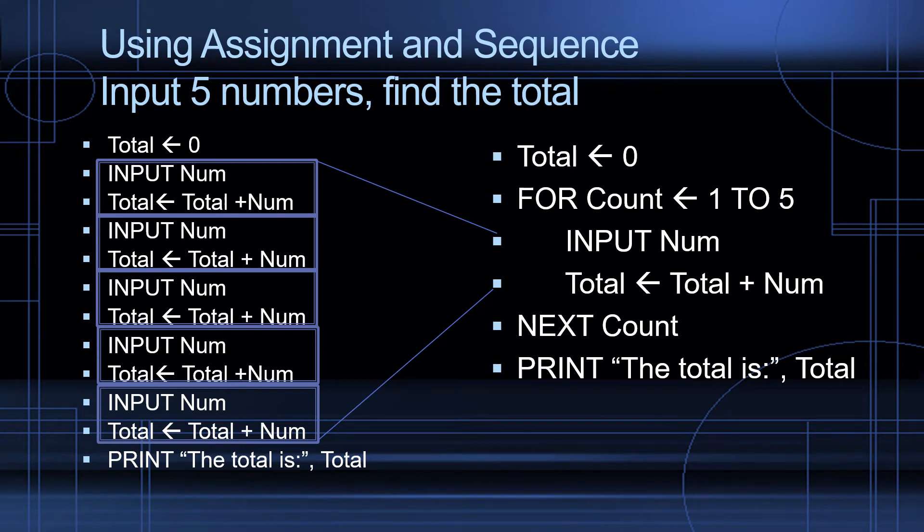Now, this is kind of the childish way to tell the computer how to find the total. A more efficient way is to write that algorithm using a for loop. So again, whenever we write an algorithm, we look for what's the output. The output is total. We initialize that to zero. So total equals zero.